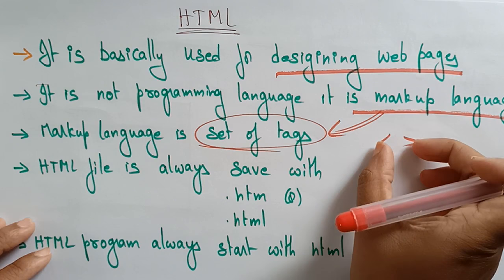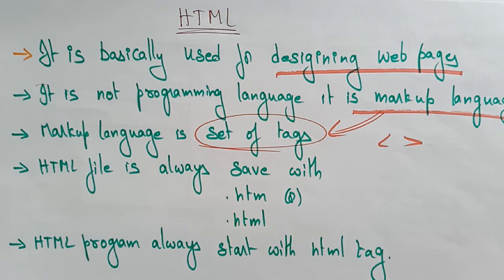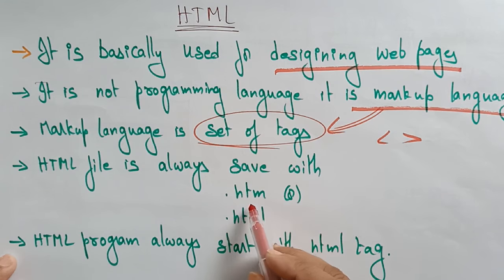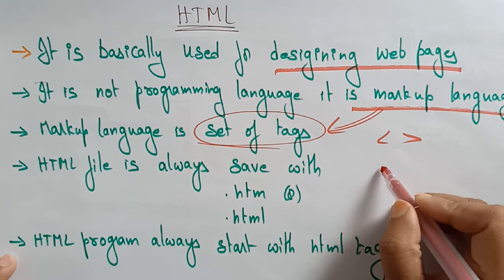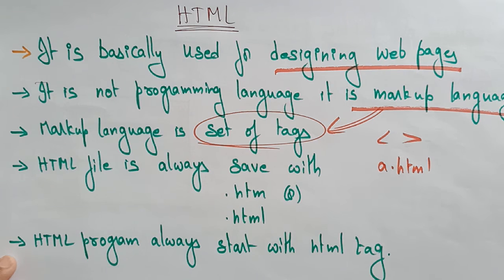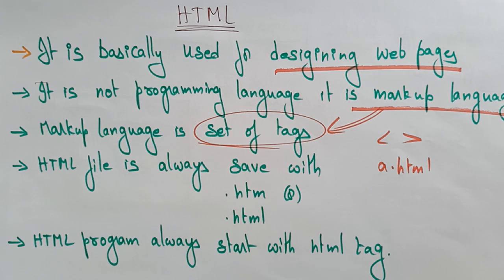HTML files are always saved with the .htm or .html extension. You save the file as, for example, a.html or a.htm. You must save the file with the .html extension for it to execute in the web browser.